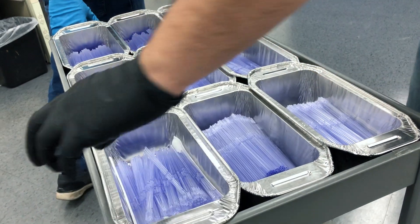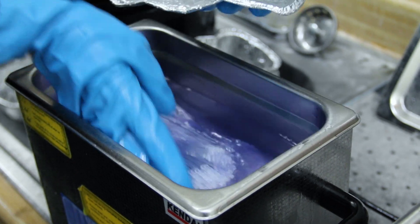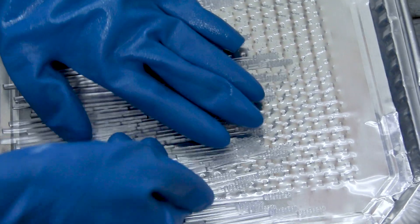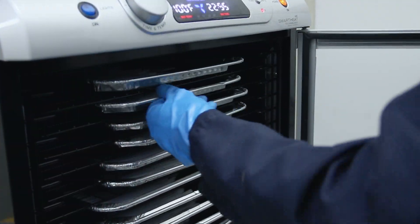Once harvested, the swabs are rinsed in ultrasonic baths of isopropyl alcohol before being spread out in a single layer and placed in a dehydrator for 30 minutes.